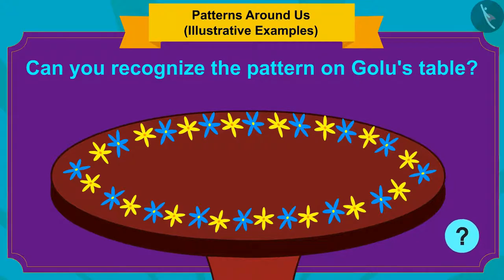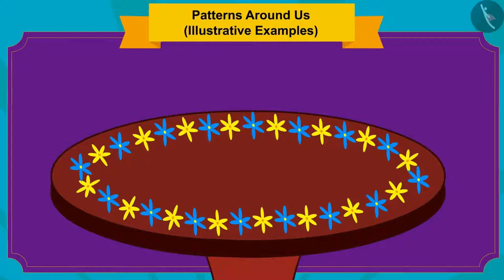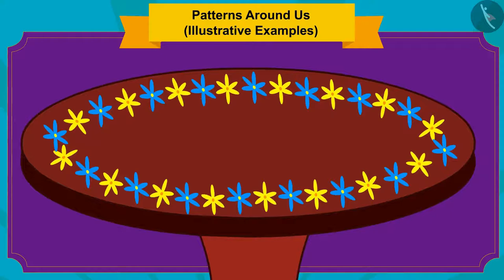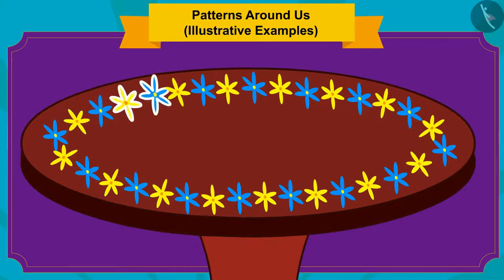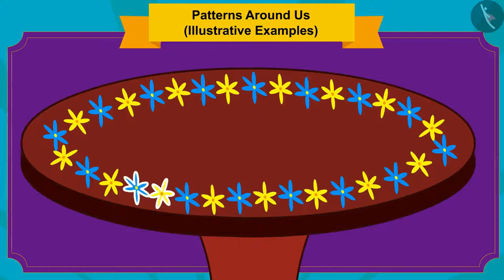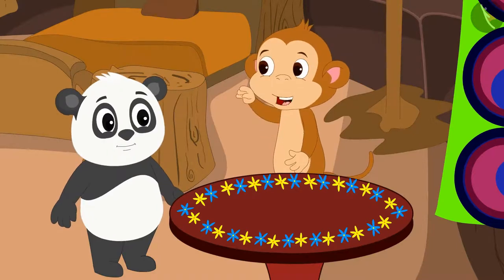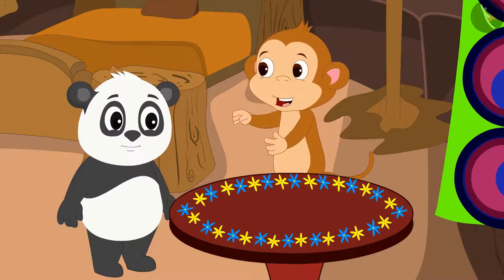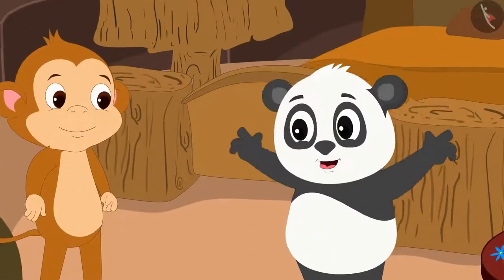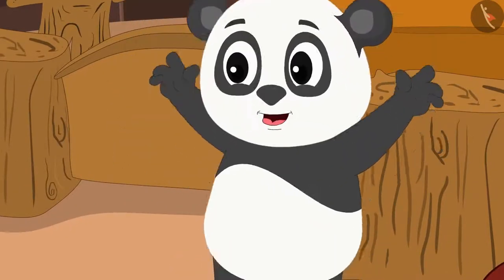If you want, you can stop the video and find the answer. In order to identify the rule of any pattern, you just have to see what is being repeated in that pattern. Here, a group of yellow flowers and blue flowers is formed, and then a pattern is made by repeating this group again and again. Babban also explained to Golu how he could find the rule of this pattern, and Golu became very happy learning about finding patterns.